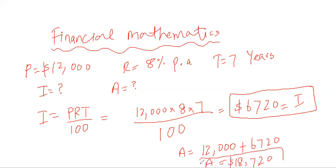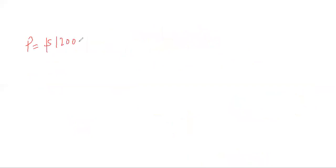So 18,720 is the total amount you are going to get at the end of seven years in your bank account for simple interest. Now I'm not going to solve a question where interest and principal are given to find R — it's simple: any three things given, you find the fourth. Now let's take the same question but for compound interest: P equals 12,000, rate is 8 percent per annum, and time is seven years, and we need to find the amount.